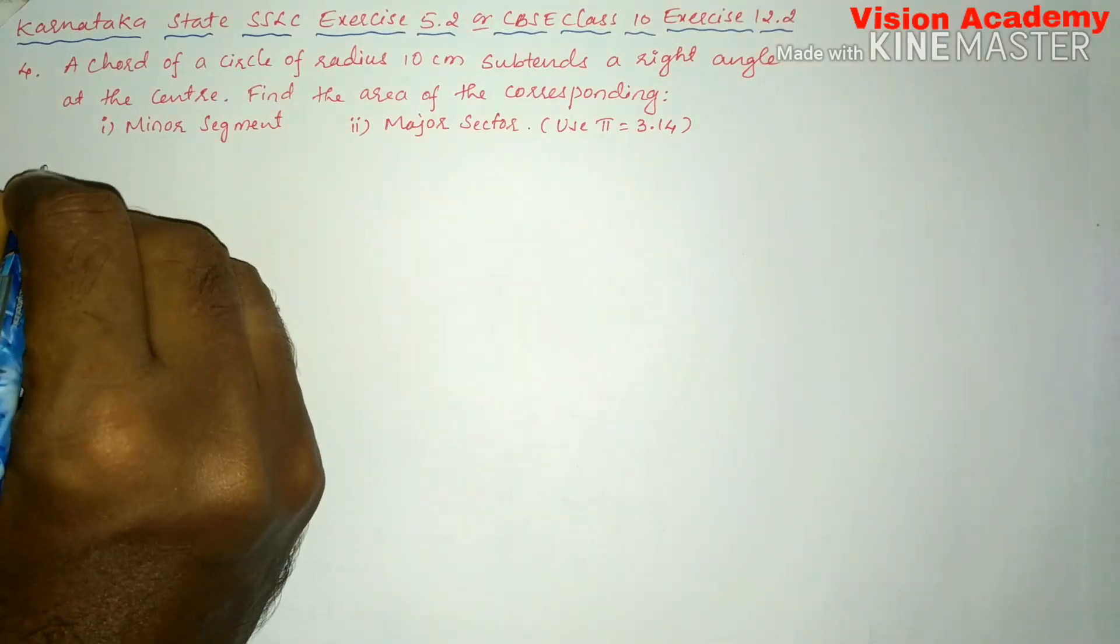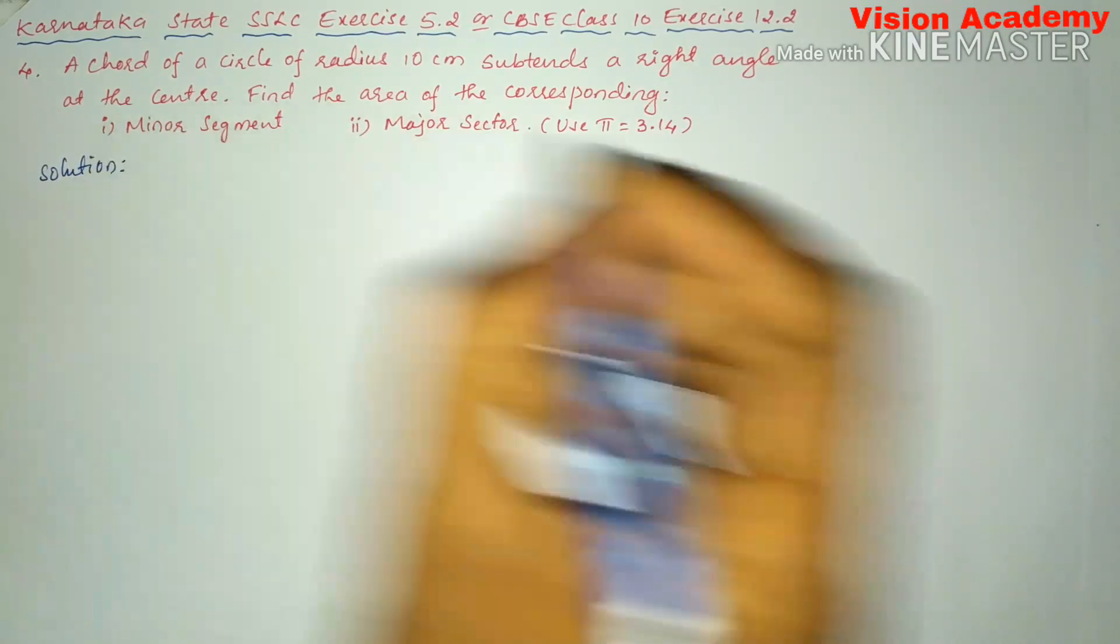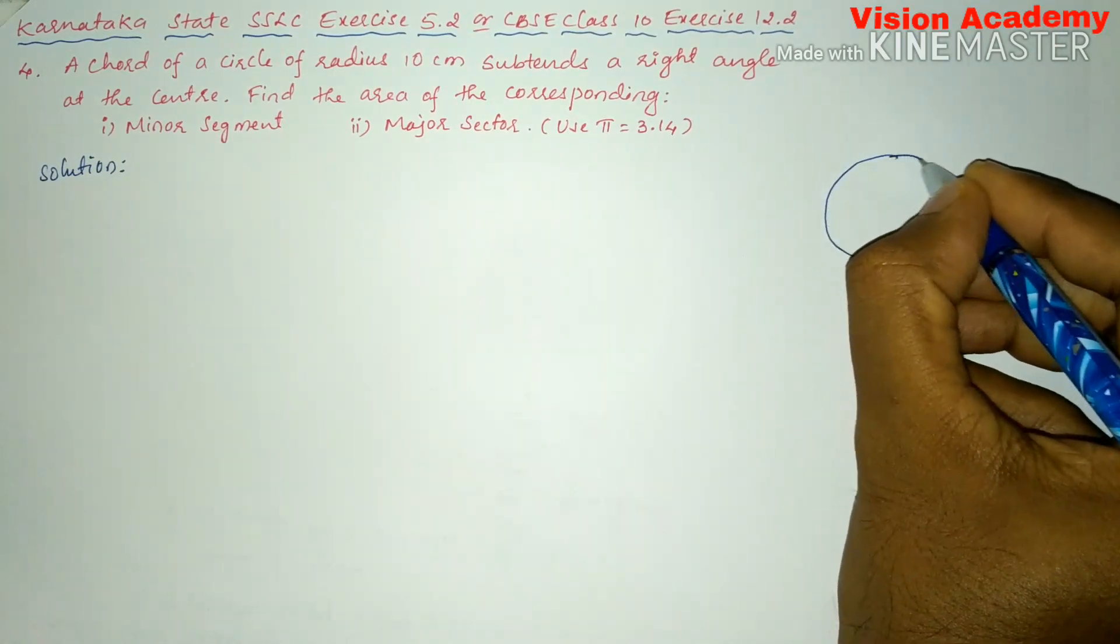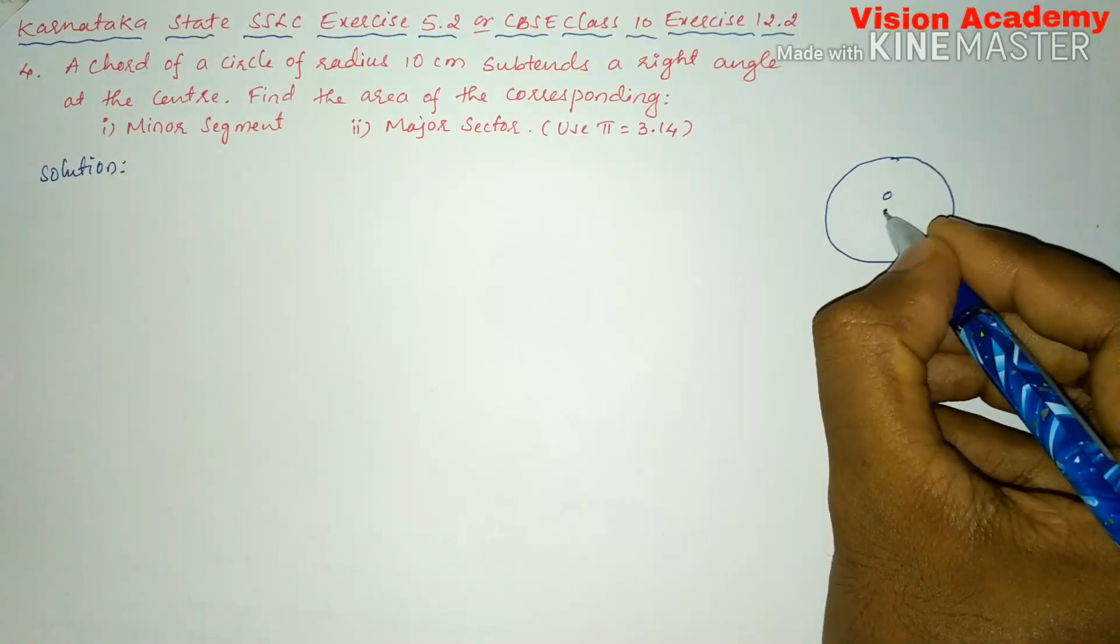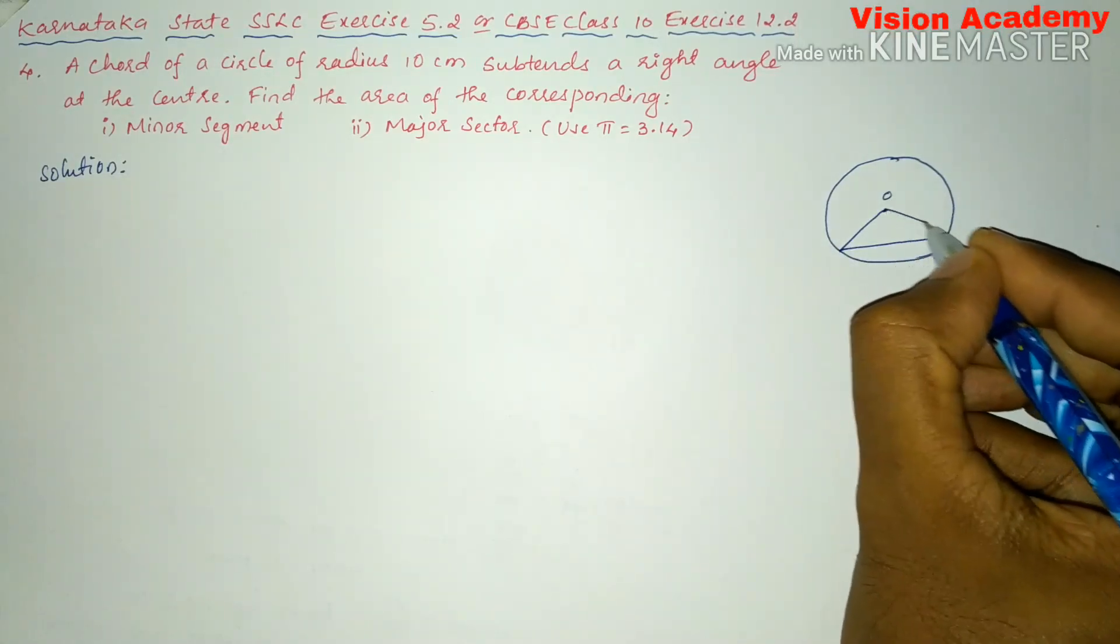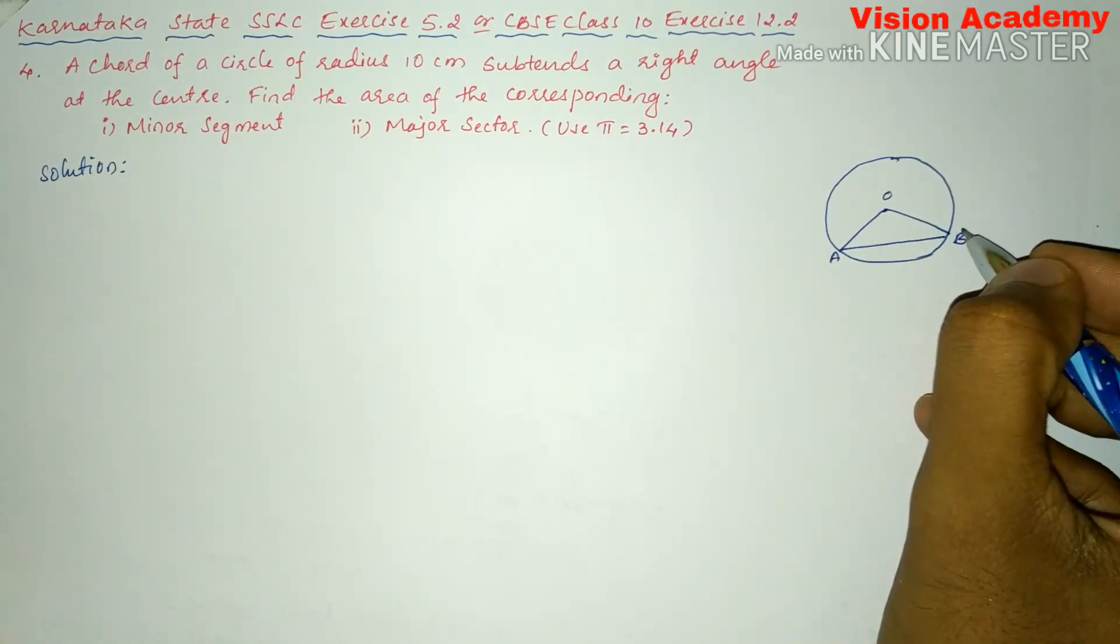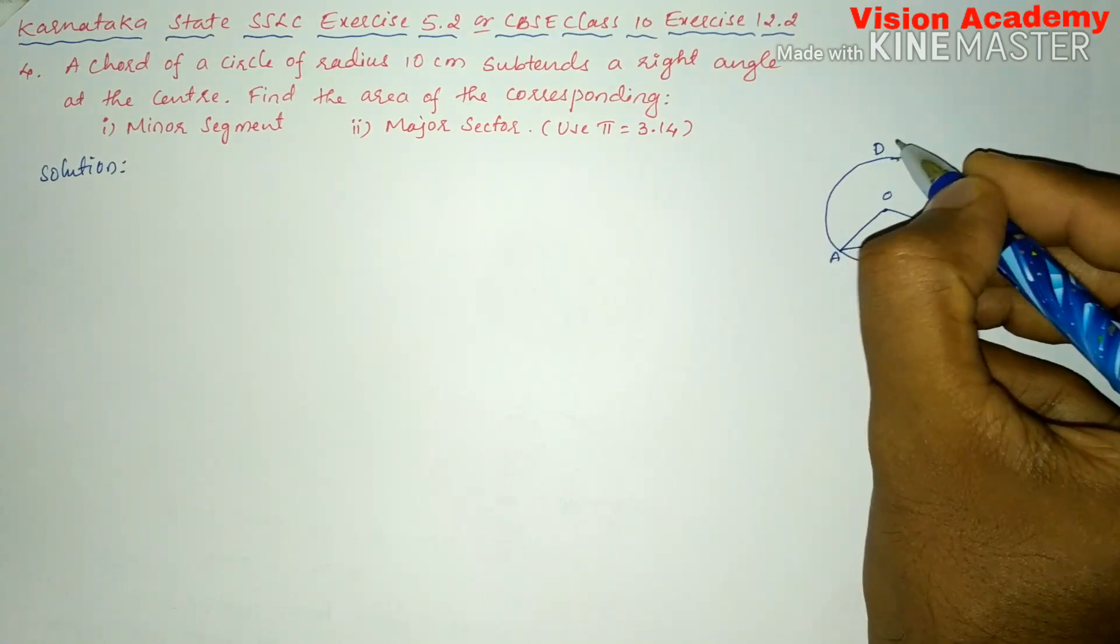Here, let us find the solution for the given problem. So let us draw a circle with center O, points A, B, and here we'll write C and this point is D.